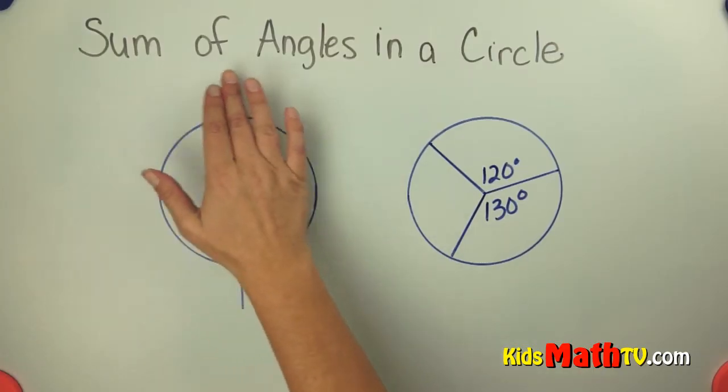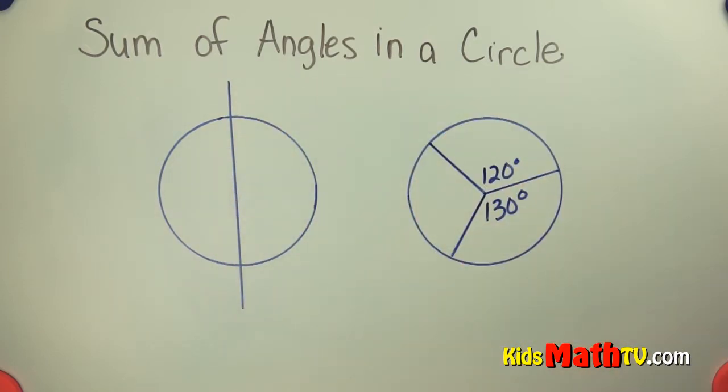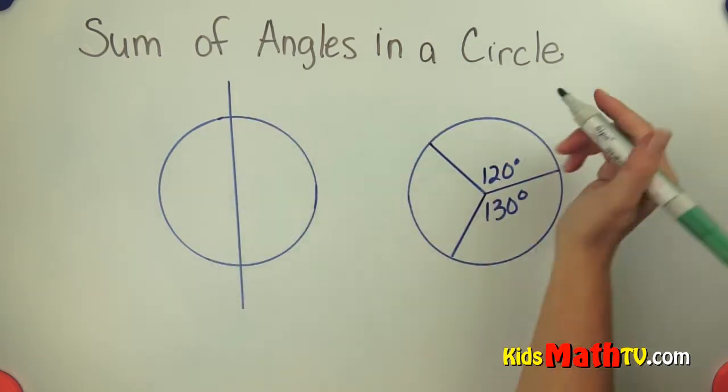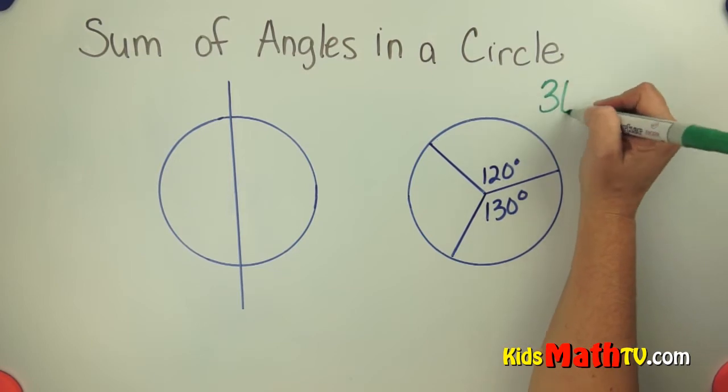In this lesson you'll learn about the sum of the angles in a circle. The sum of the angles in a circle, the magic number there is 360 degrees.